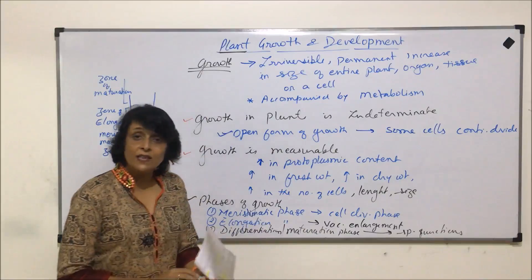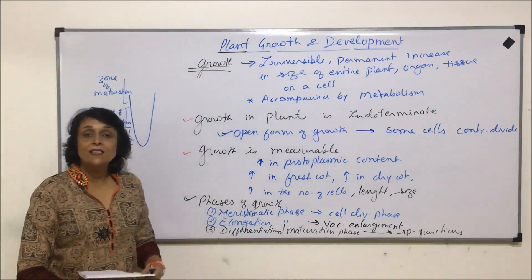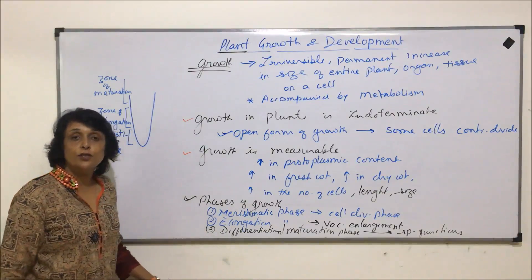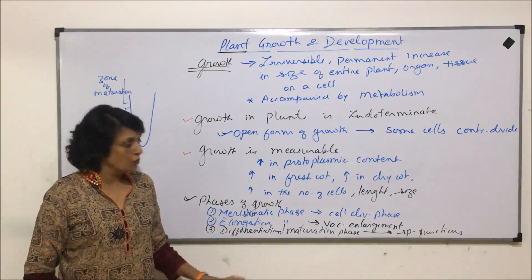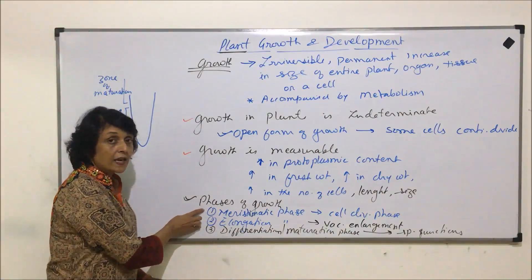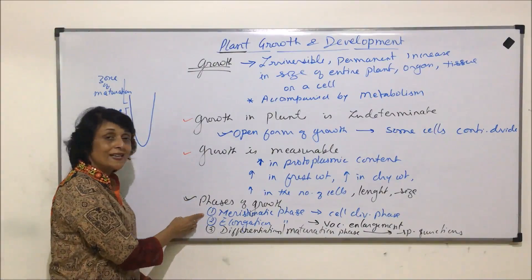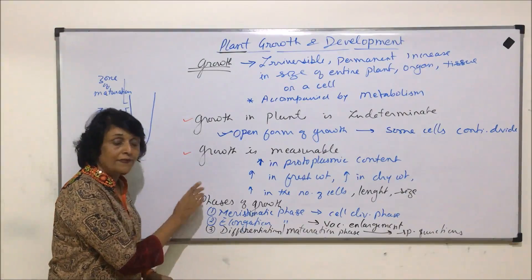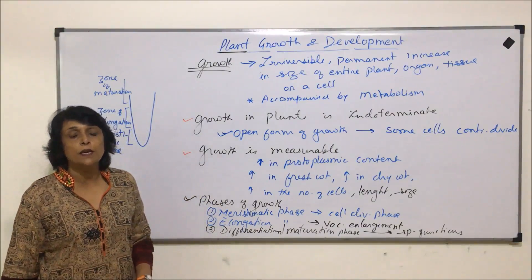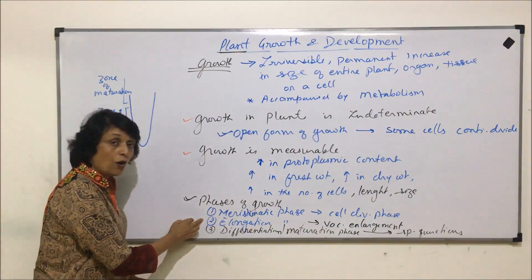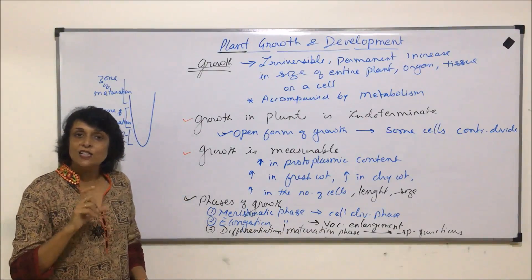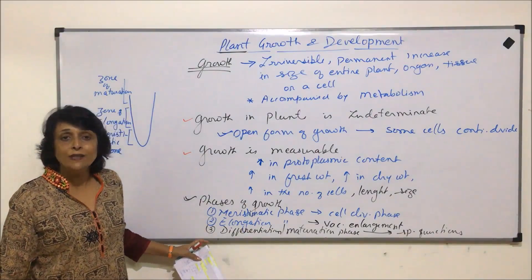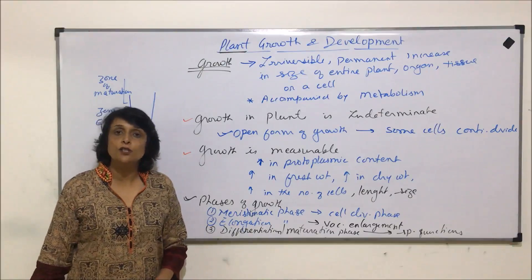In the differentiation phase, cells become specialized for a particular function. For example, in the apical meristem of a root, cells will elongate and when differentiated, some cells would form parenchymatous cells, while some would change into xylem and phloem to perform various functions. Meristematic cells are isodiametric, without any intercellular spaces, and they have a primary cell wall. Elongation is a special feature of plant cells — they have a very large vacuole that helps in elongation. Differentiation changes a cell into a specialized cell so it can perform a specific function in the plant.